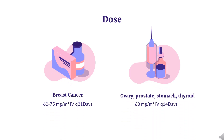Dose: Cancers treated include cancer of the breast, ovary, prostate, stomach, thyroid, small cell cancer of the lung, liver, squamous cell cancer of the head and neck, multiple myeloma, Hodgkin's disease, lymphomas, ALL, and AML. Dosing schedules: 60–75 mg/m² every 21 days; or 60 mg/m² every 14 days; or 40–60 mg/m² every 21–28 days; or 20 mg/m² per dose weekly.